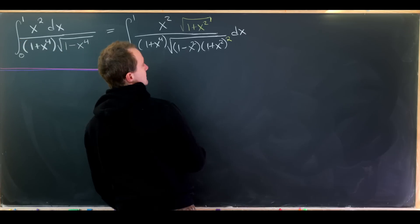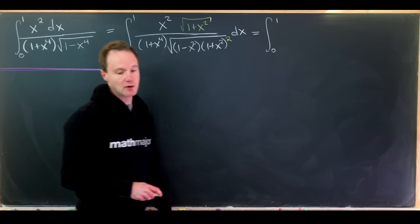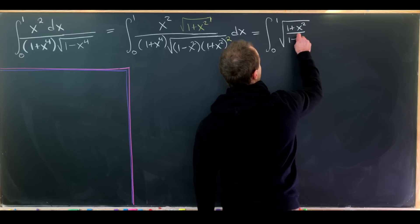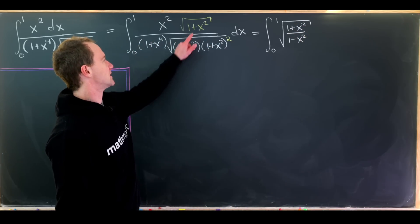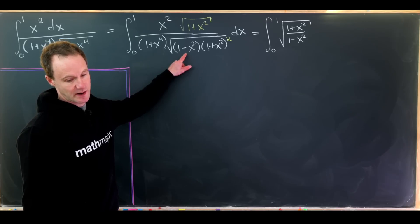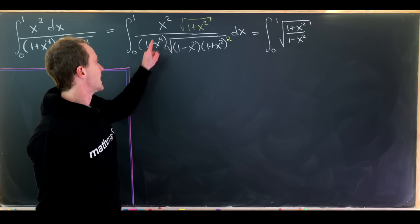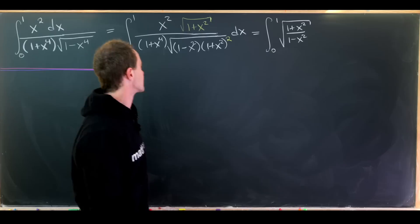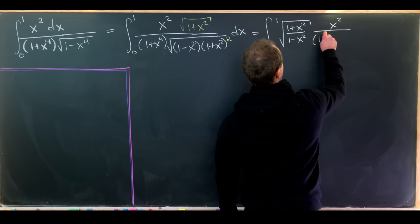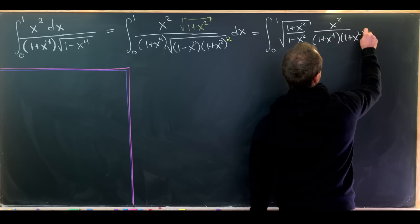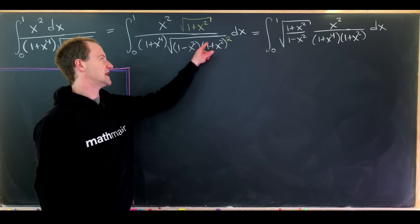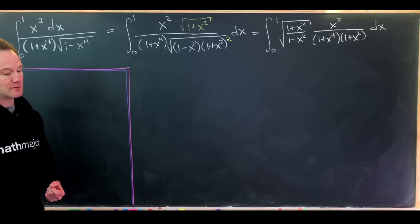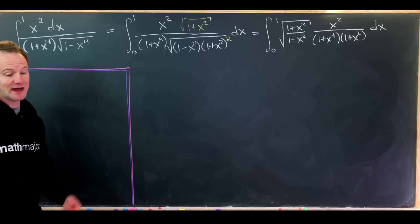Now let's rewrite this. We'll still have the integral from 0 to 1, and I'm going to write it as the square root of 1 plus x squared over 1 minus x squared — that comes from those two factors. Then we'll have x squared in the numerator, 1 plus x to the fourth in the numerator, and 1 plus x squared in the denominator, leaving us with x squared over 1 plus x to the fourth times 1 plus x squared, dx.